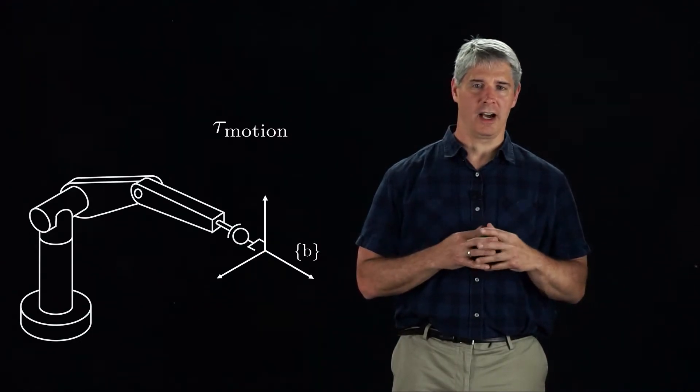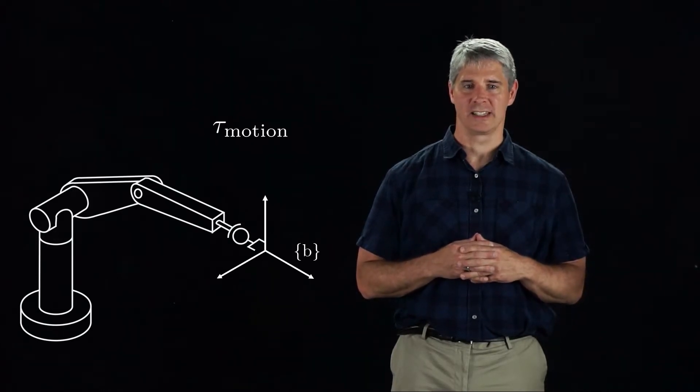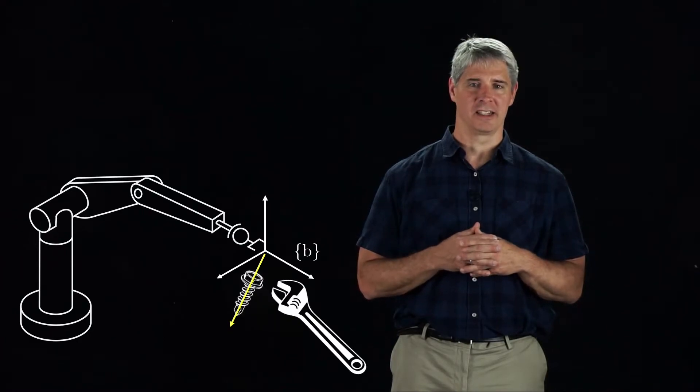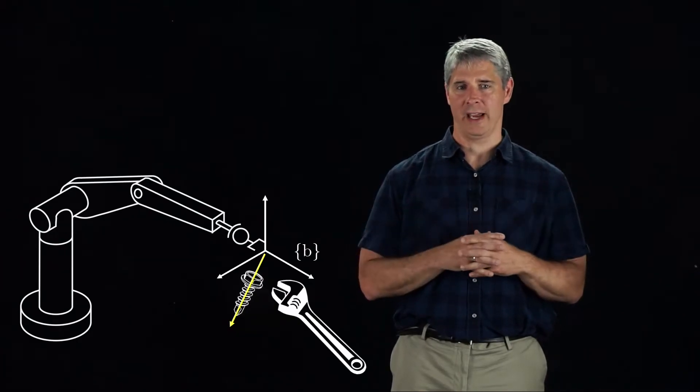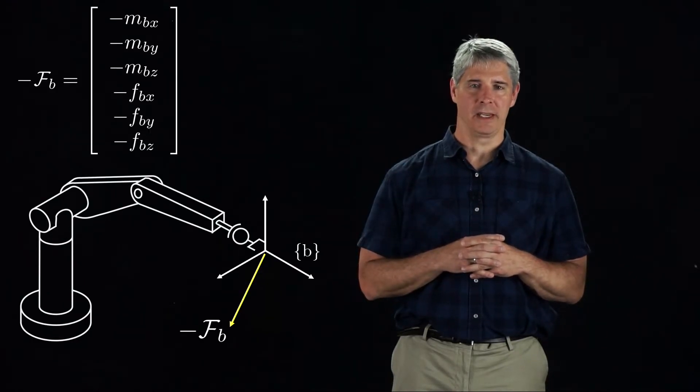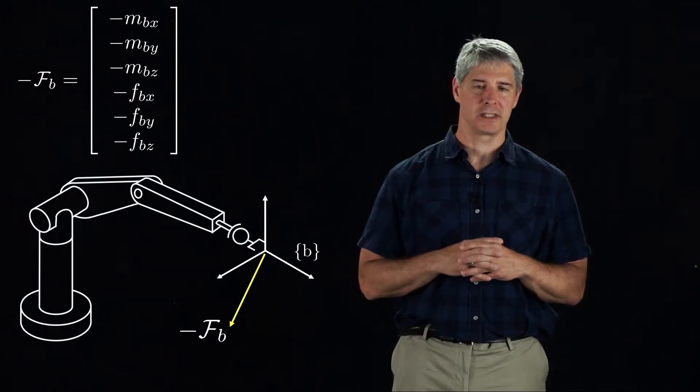Now assume we choose a particular time instant t, and let tau motion be the joint torques at this instant. Now assume that someone applies a wrench to the hand at this instant. Perhaps someone grabs the hand of the robot. We will call this wrench minus Fb, consisting of three angular moments and three linear forces expressed in the B frame.